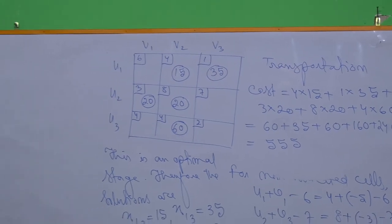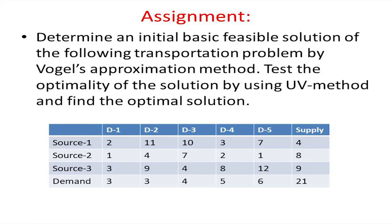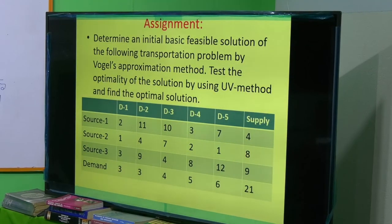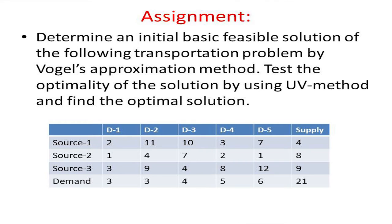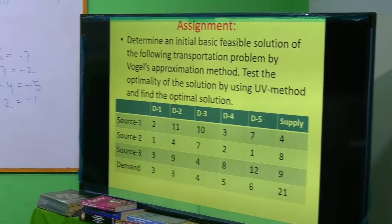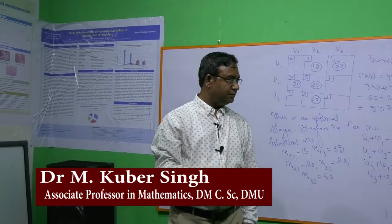There is one assignment problem: determine an initial basic feasible solution of the following transportation problem by Vogel's Approximation Method, then test the optimality of the solution by using UV method as demonstrated, and finally find the optimal solution. This is your assignment. Thank you, let us stop here today.